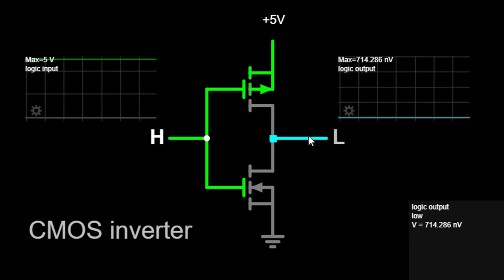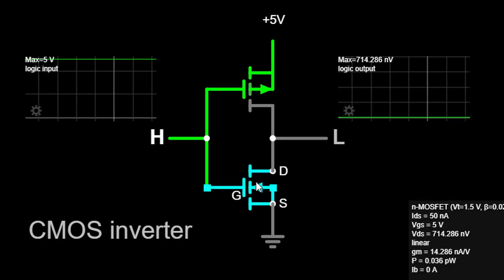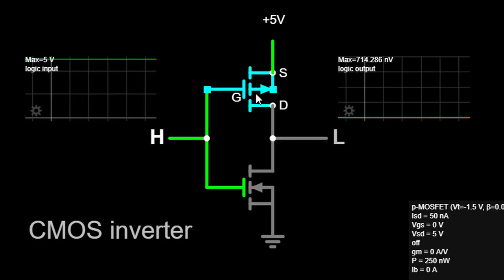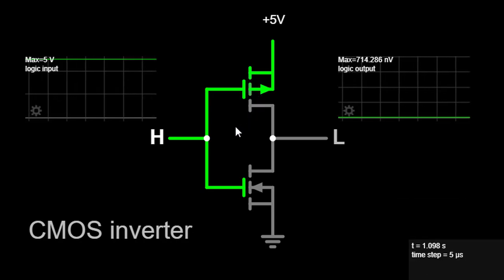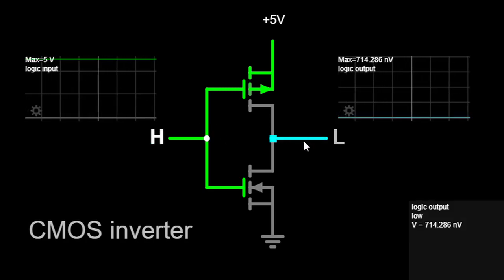Conversely, when a logical low voltage (logic 0) is applied to the input, the NMOS transistor turns OFF, and the PMOS transistor turns ON, pulling the output node up to the logical high voltage (logic 1). This switching action creates the inversion effect, where the input and output logic levels are reversed.